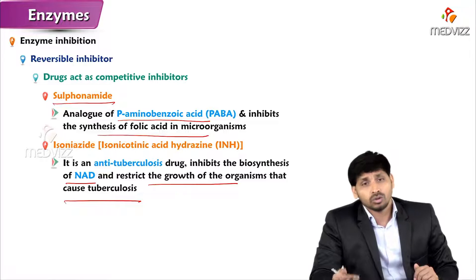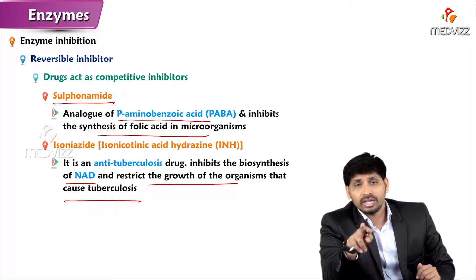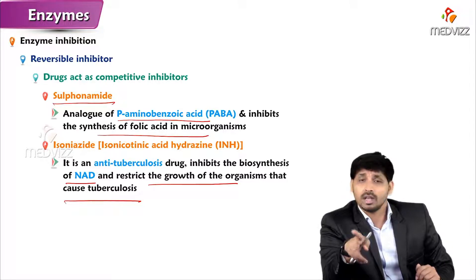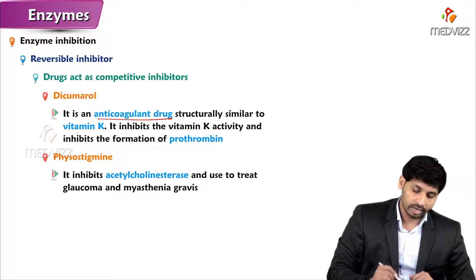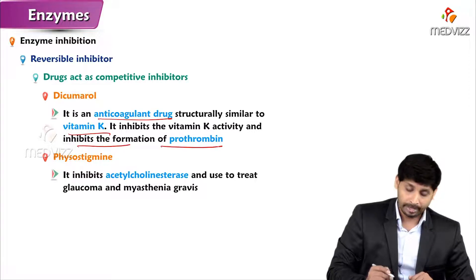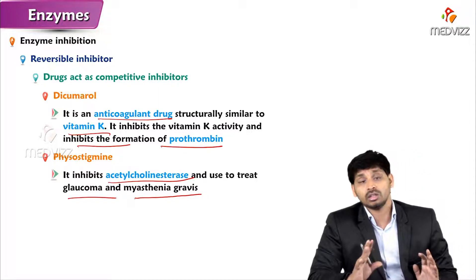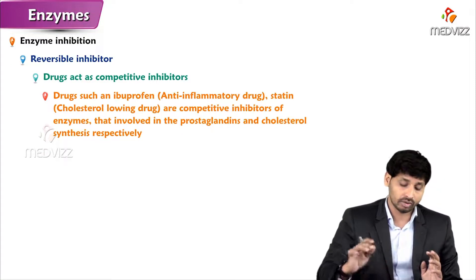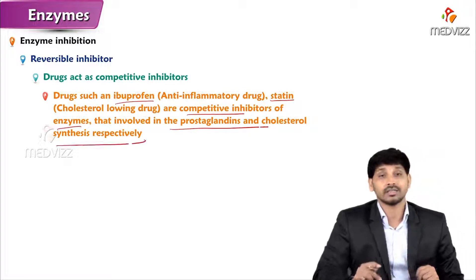Dicoumarol is an anticoagulant drug structurally similar to vitamin K that inhibits vitamin K activity and prothrombin formation. Physostigmine inhibits acetylcholinesterase and is used to treat glaucoma and myasthenia gravis. Anti-inflammatory drugs like ibuprofen and cholesterol-lowering statin drugs are competitive inhibitors of enzymes involved in prostaglandin and cholesterol synthesis respectively.